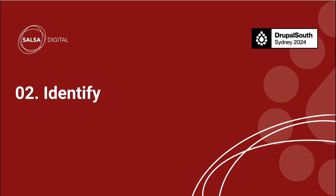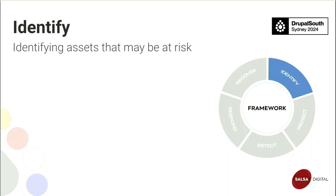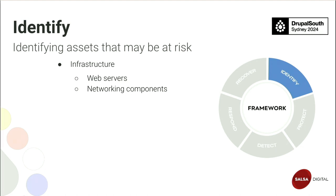Starting with the first phase of the cybersecurity framework — identify — this involves identifying assets that may be at risk. For infrastructure, components that might be targeted include computing infrastructure such as web servers and worker nodes, as well as networking components like load balancers. For the application layer, the vast majority of vulnerabilities in Drupal sites come from contrib modules, themes, and libraries, so it's important to track those and monitor the Drupal security advisories.